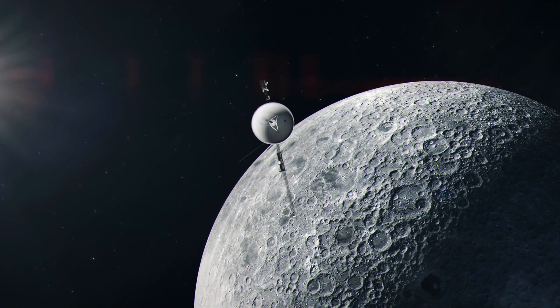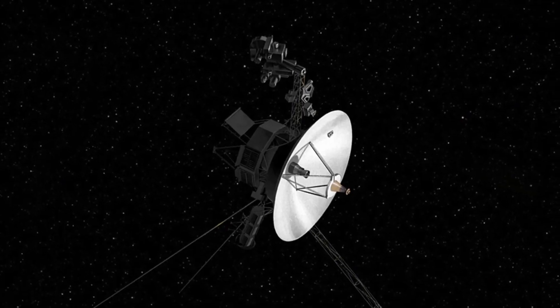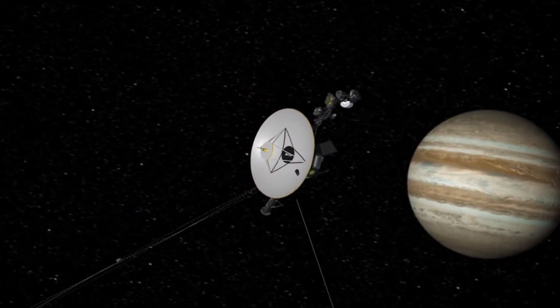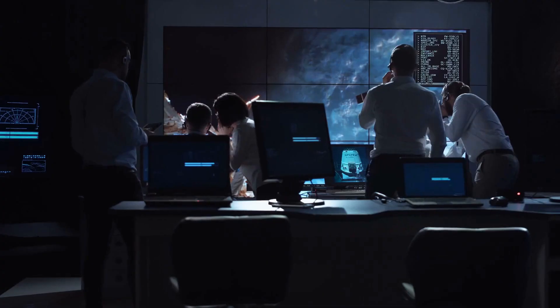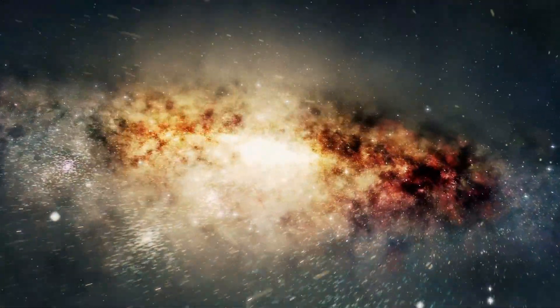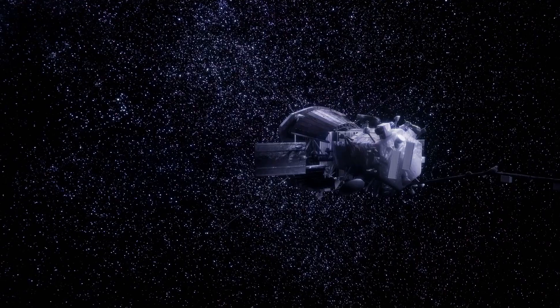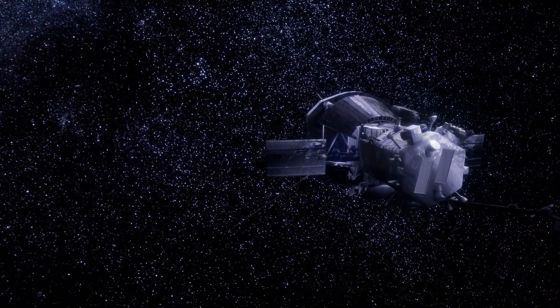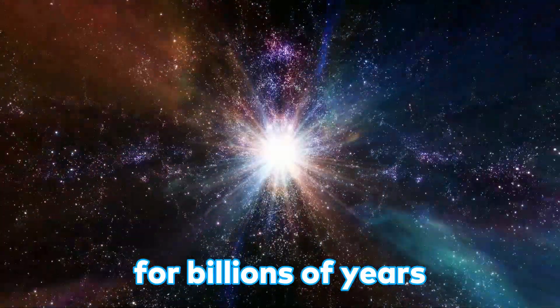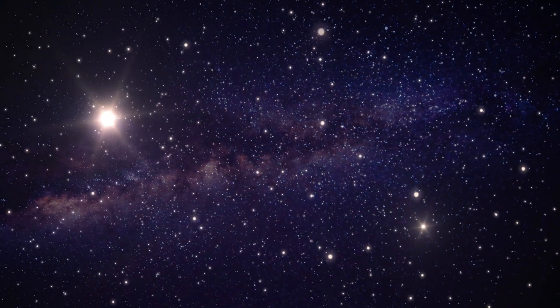The power source of the Voyager probe, a plutonium-238 core, is gradually losing its energy, and in about five years, the probe is expected to be officially retired. Nevertheless, scientists believe that they are still capable of making additional measurements in interstellar space using this Voyager satellite, and, after its retirement, the probe, while it can rest peacefully, will remain in its own orbit around the galaxy for billions of years, with the chance of its collision with anything being almost non-existent.